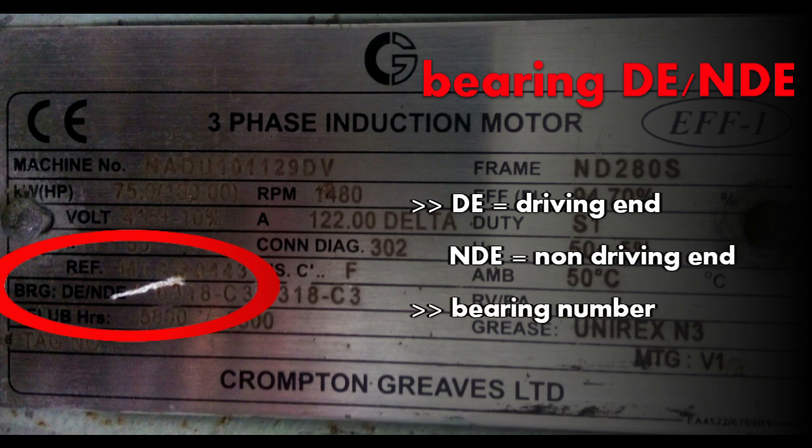Next comes the bearing DE and NDE. DE denotes driving end and NDE denotes non-driving end. It tells you the number of bearing which is to be used at driving end and at non-driving end.